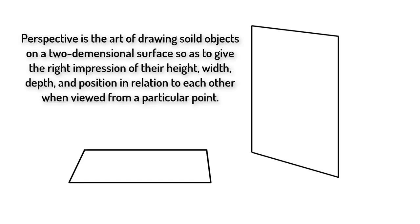Before we begin we first need to understand what perspective is. Perspective is the art of drawing solid objects on a two-dimensional surface so as to give the right impression of their height, width, depth, and position in relation to each other when viewed from a particular point. Things will appear to get smaller the further away they are from the viewer. For example, the front and back edges of this piece of paper are the exact same size in reality but one edge looks smaller simply because it's farther away from the camera.